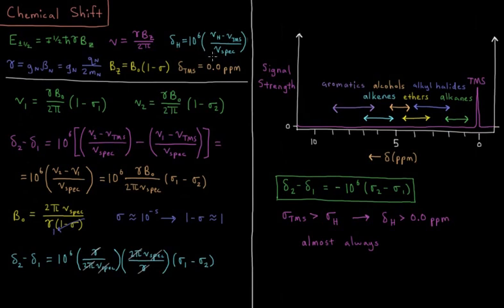What if we want to look at the difference in chemical shift between two individual nuclei? So delta 2 minus delta 1, chemical shift of nucleus 2 minus chemical shift of nucleus 1, assuming we're talking about H1 NMR. That would be 10 to the sixth times nu2 minus nuTMS over nuSpec minus nu1 minus nuTMS over the frequency of the spectrometer again.